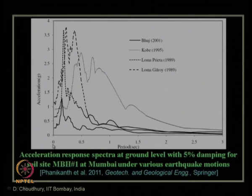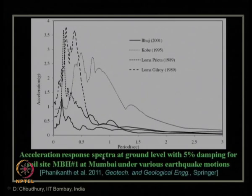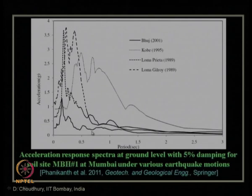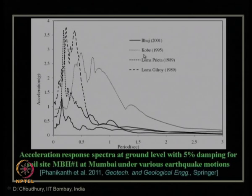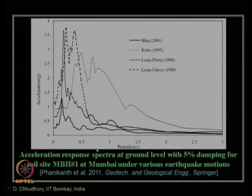The acceleration response spectra at ground level shows spectral acceleration versus period for different earthquake input motions: Bhuj (solid dark line), Kobe (dotted), Loma Prieta, and Loma Guillory. Depending on different input motion, the output also differs for the same borehole location MBH 1 at ground level. This response spectra is computed at ground level considering 5 percent damping for the equivalent single-degree-of-freedom model — not the actual soil damping.